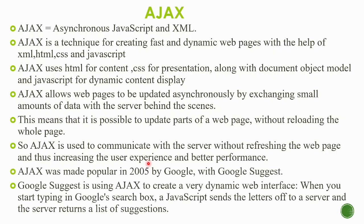Ajax was made popular in 2005 by Google with Google Suggest. If you are using the Google search box, you are using suggestions — this is a dynamic web page, a web interface. When you start typing in the Google search box, JavaScript sends the letters off to a server, and the server returns a list of suggestions displayed in the background.